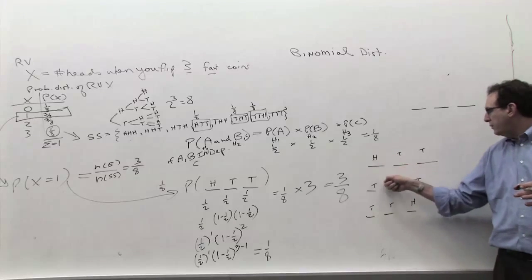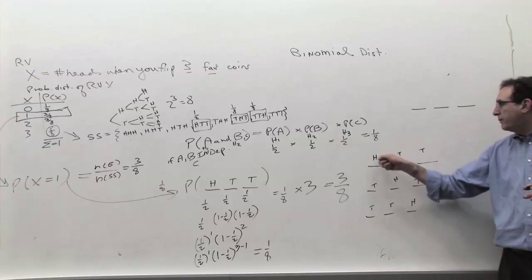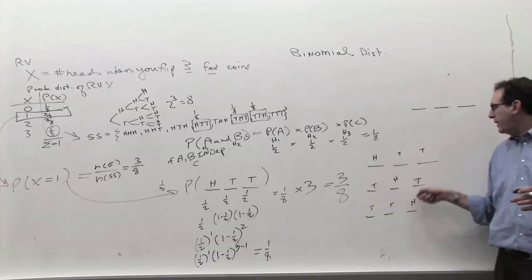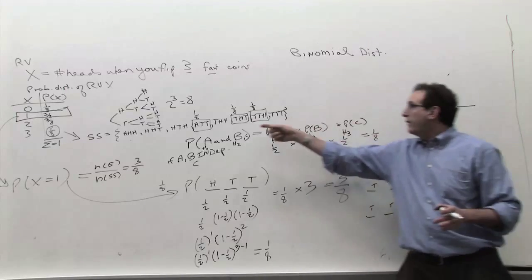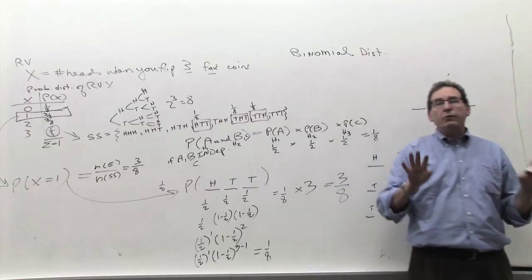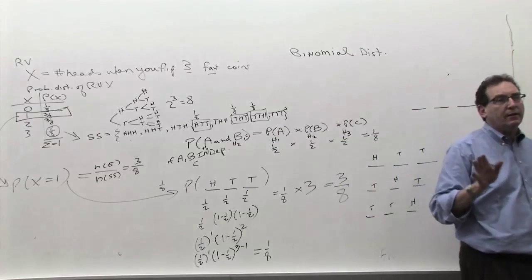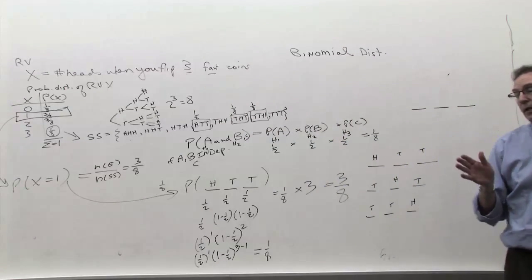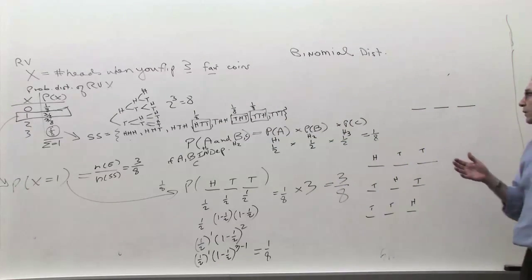The fact that there are three of them is not a shock, because we can just see that: here's one, here's two, and here's three. It could be the beginning, the middle, and the end. So the fact that there are three of them is not in doubt.